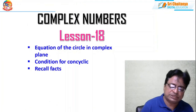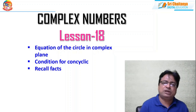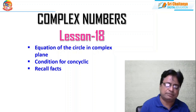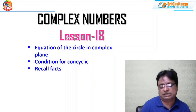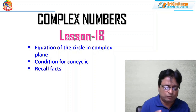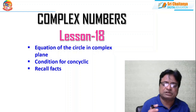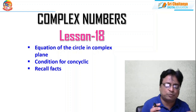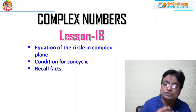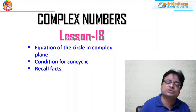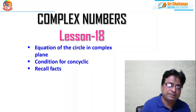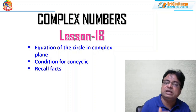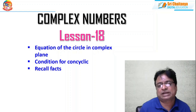Up to lesson number 17, we concentrated on the equation of the line and the properties of lines in complex numbers — that is, if two points are given, what is the equation of the line passing through them — along with slope, complex slope, and conditions for parallel lines, perpendicular lines, and the perpendicular image. All of that we have already practiced.